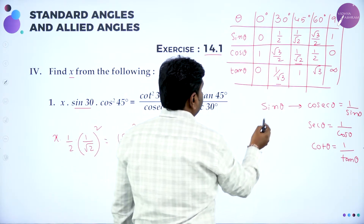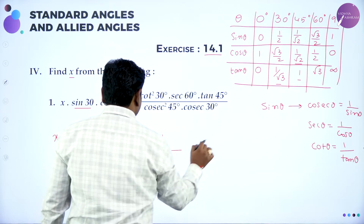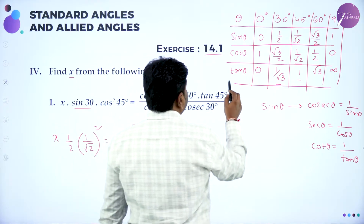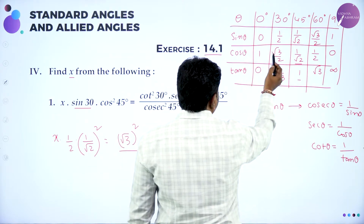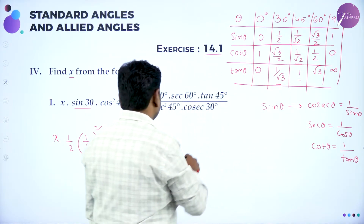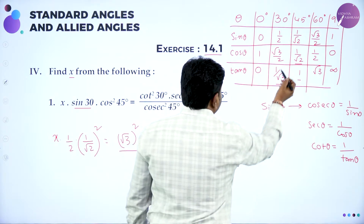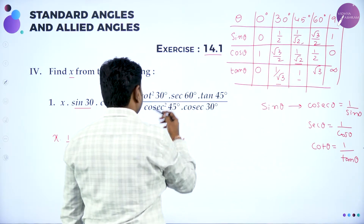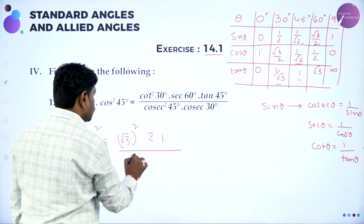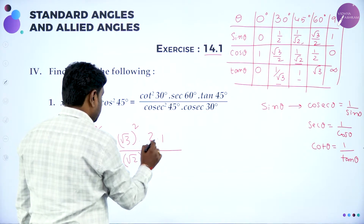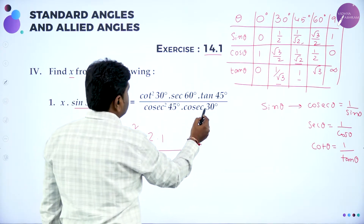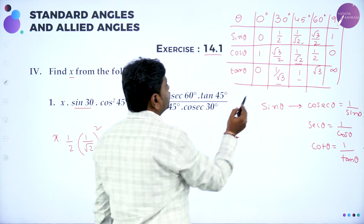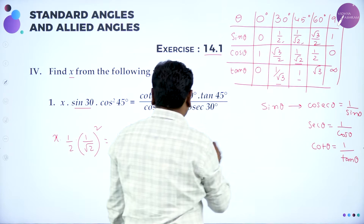Tan 45 = 1. Cosec² 45: sin 45 = 1/√2, so cosec 45 = √2, giving cosec² 45 = (√2)². Cosec 30: sin 30 = 1/2, so cosec 30 = 2.